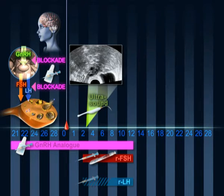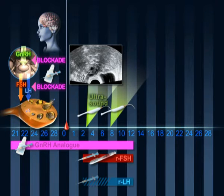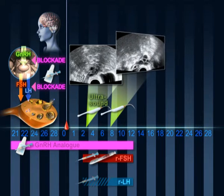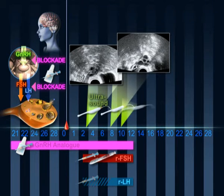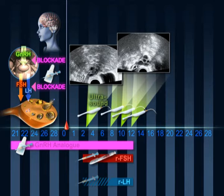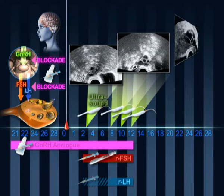At the end of approximately 4-6 days of stimulation, another scan is performed to check the number and size of the follicles as well as the quality of the endometrium. Every 2 or 3 days a new scan is performed.